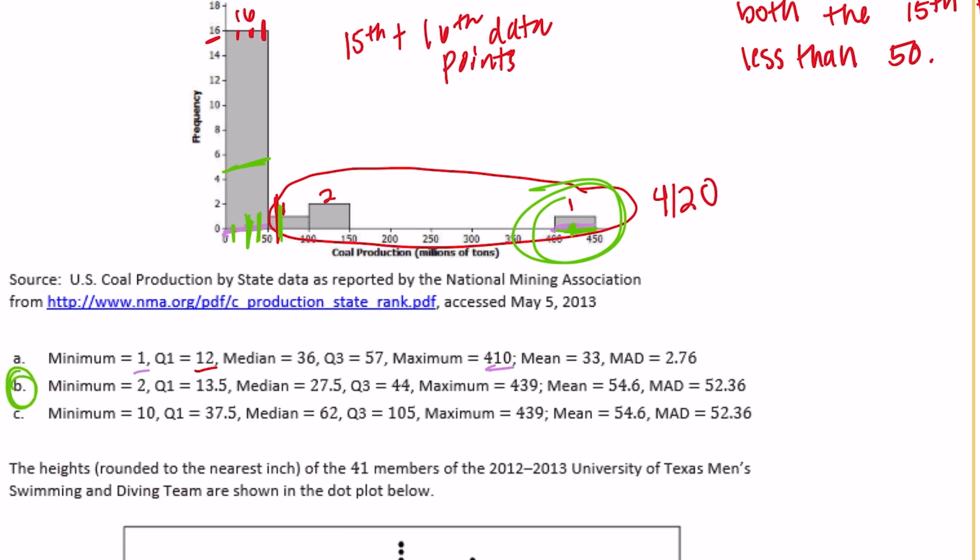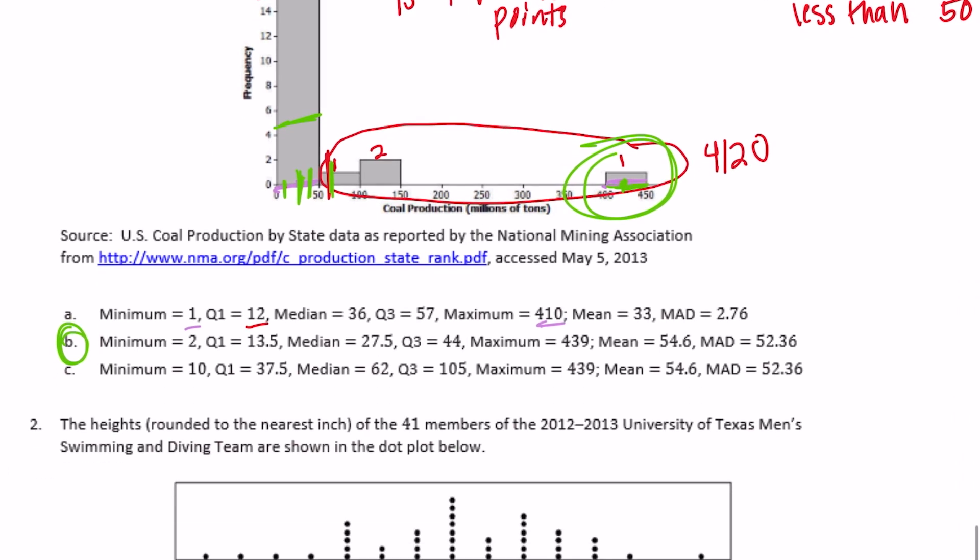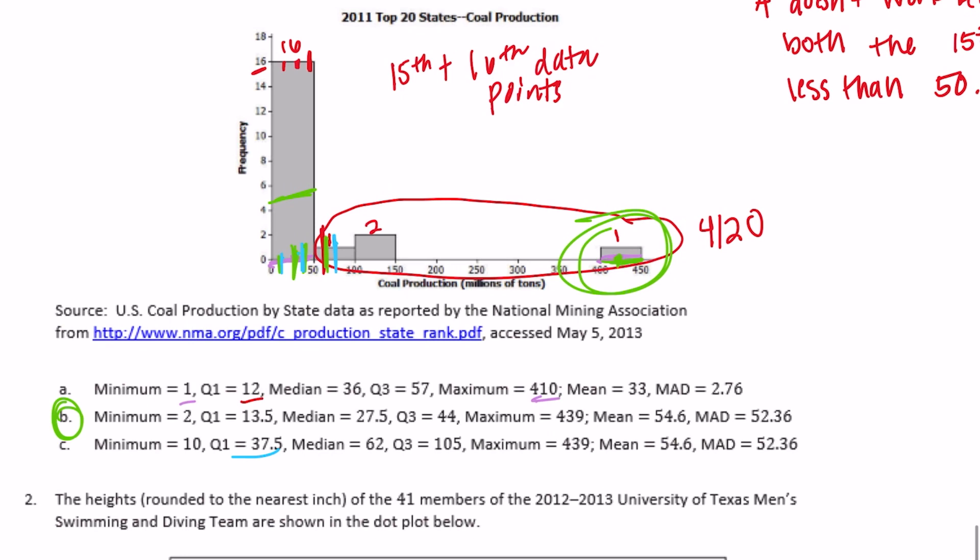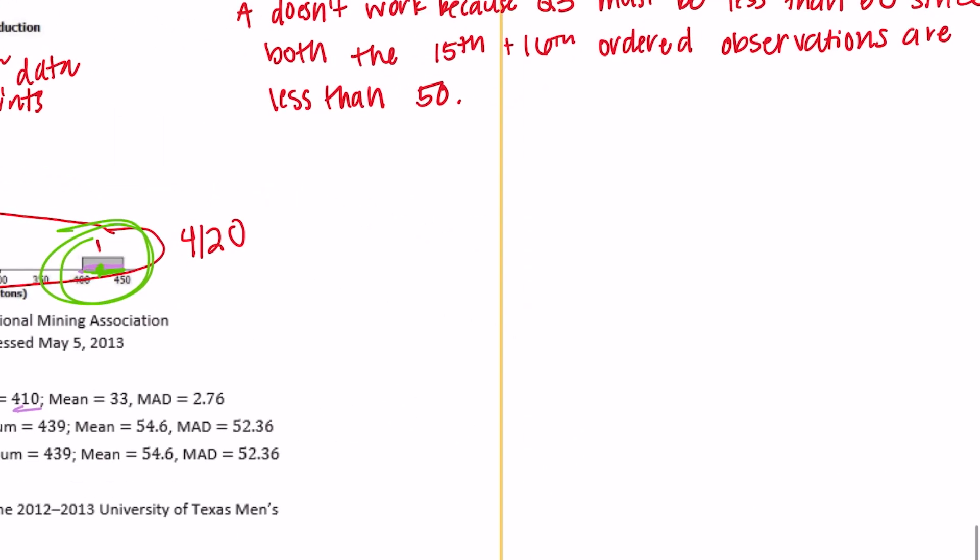C: the minimum is 10, okay. Quartile one is 37.5, that seems a little high considering it's only quartile one but technically could work. Median 62, again that seems too high because the median is the middle number, so that should be the number between 10th and 11th data point, and we know those both are in here because the first 16 data points are in there. So I know C can't work. C doesn't work.